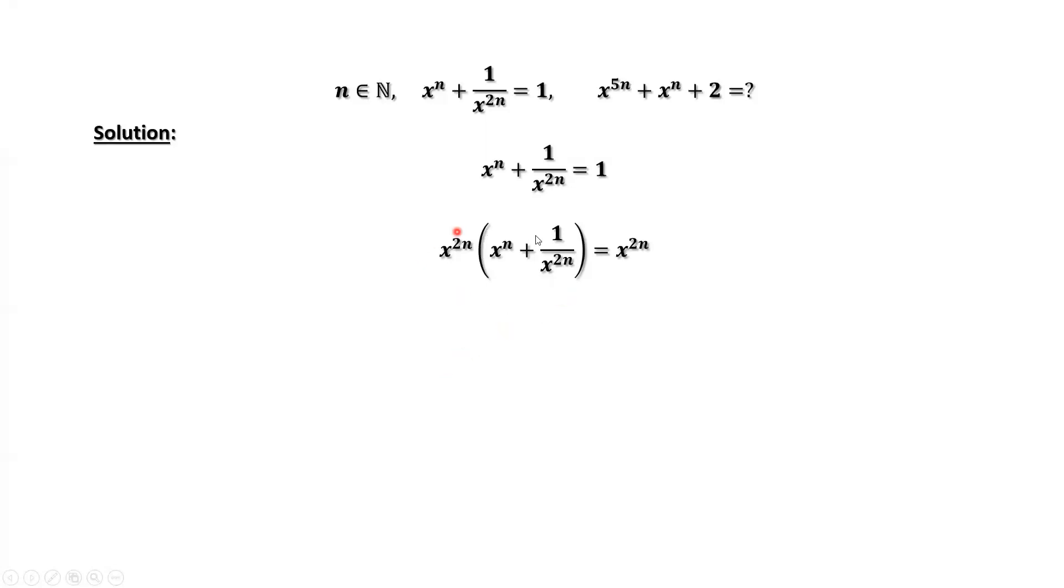Simplify the left-hand side: x^(2n) times x^n equals x^(3n), and x^(2n) times 1/x^(2n) equals 1.